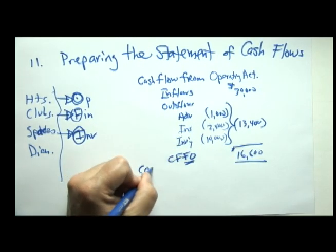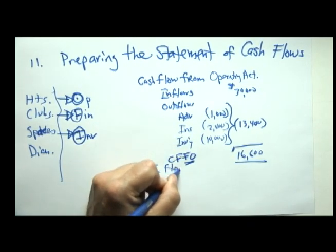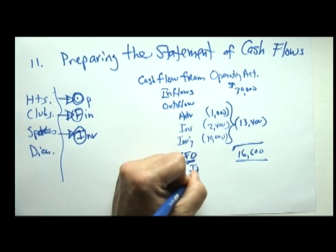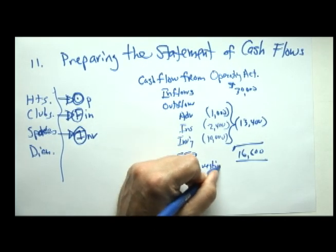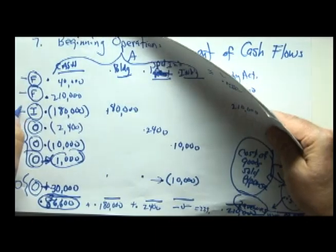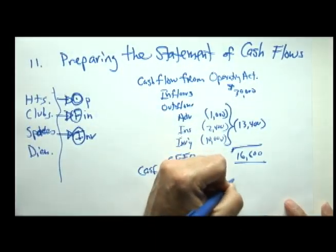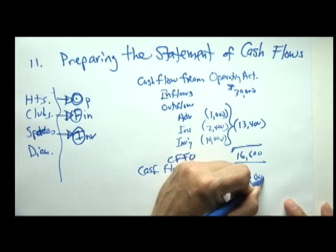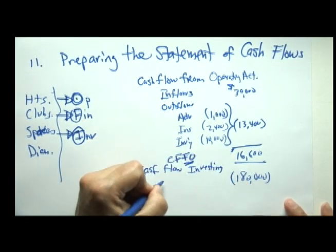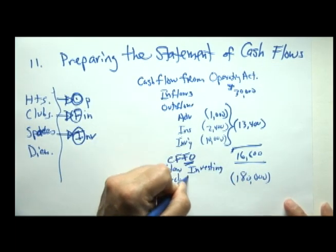Our cash flow from investing activities, going back to our database, there was just one. It was a decrease of $180,000, and we'll call this purchased building.